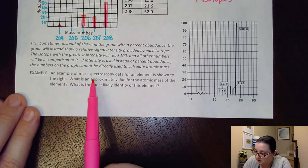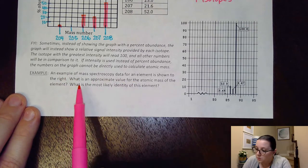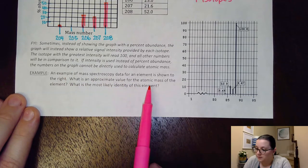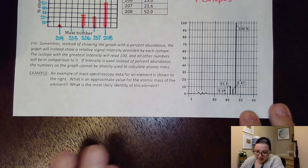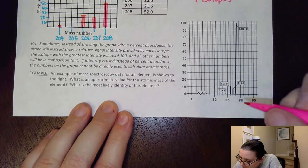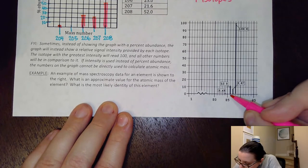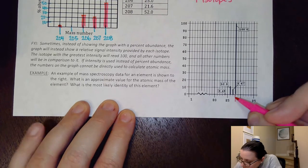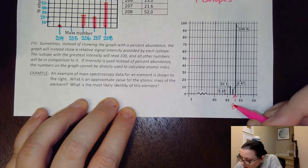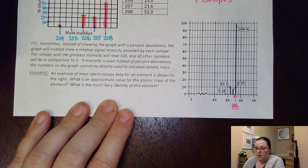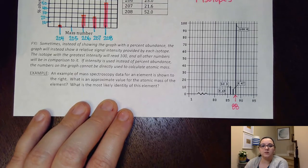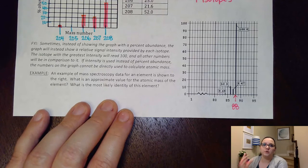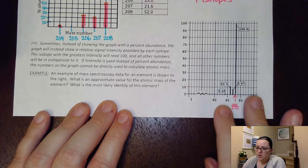If I look here at this data, I notice some small peaks at like 84, 86, 87. And at this peak that's representing 88, I see that that peak is huge in comparison to the other ones. That means I have a huge percent of my substance that has a mass number of 88.